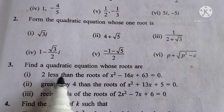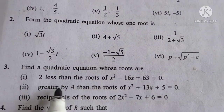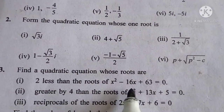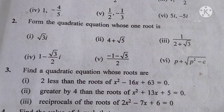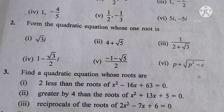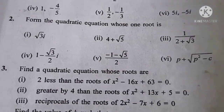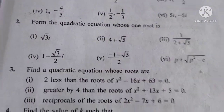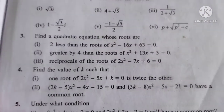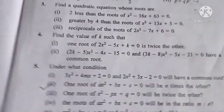Find a quadratic equation whose roots are 2 less than the roots of x squared minus 16x plus 63 equal to 0. We have to find a quadratic equation whose roots are 2 less than the roots of x squared minus 16x plus 63 equal to 0.